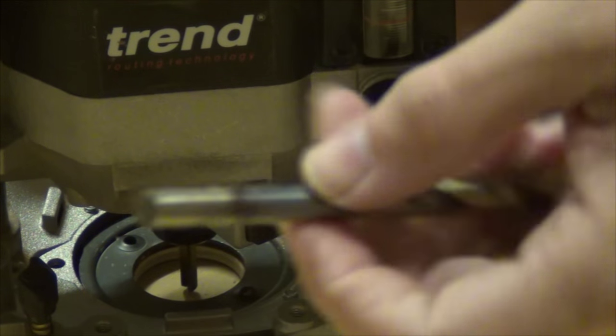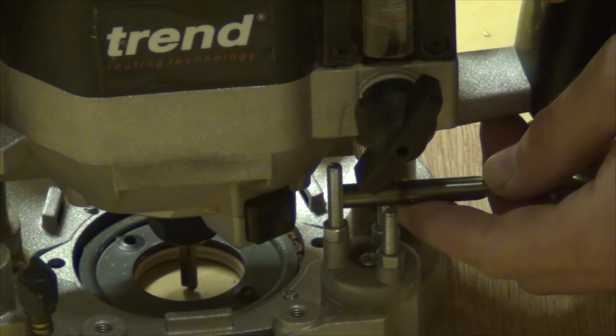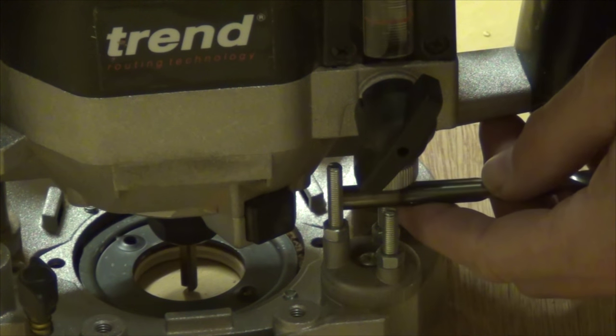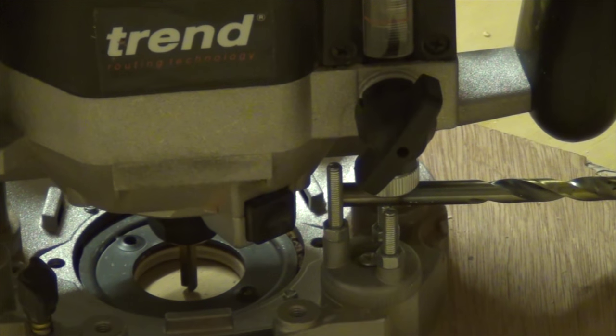Now insert the end of your drill shaft between the turret stop and the depth stop and either drop or wind down however your router works the depth stop so it just pinches the shaft of the drill bit and lock it off.